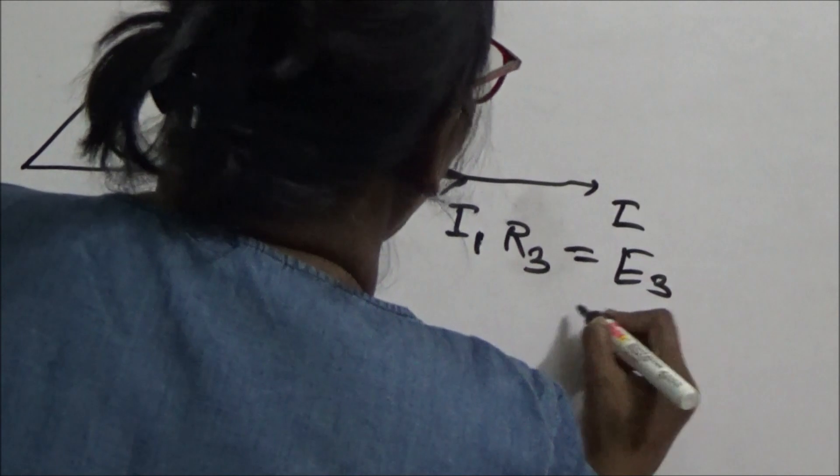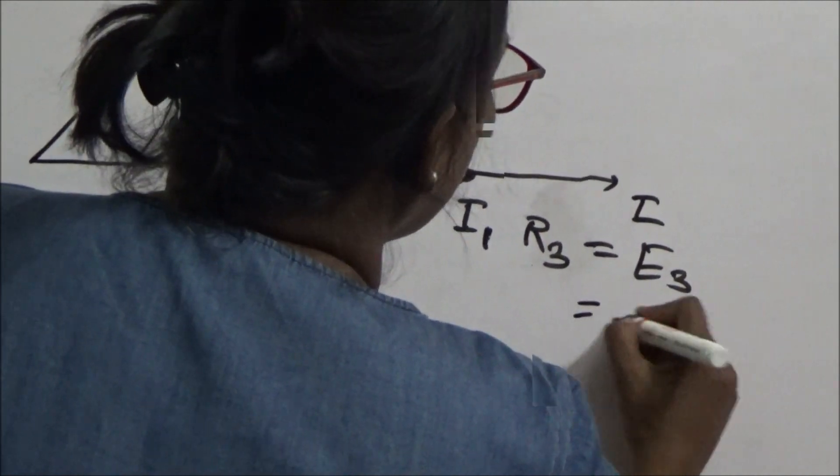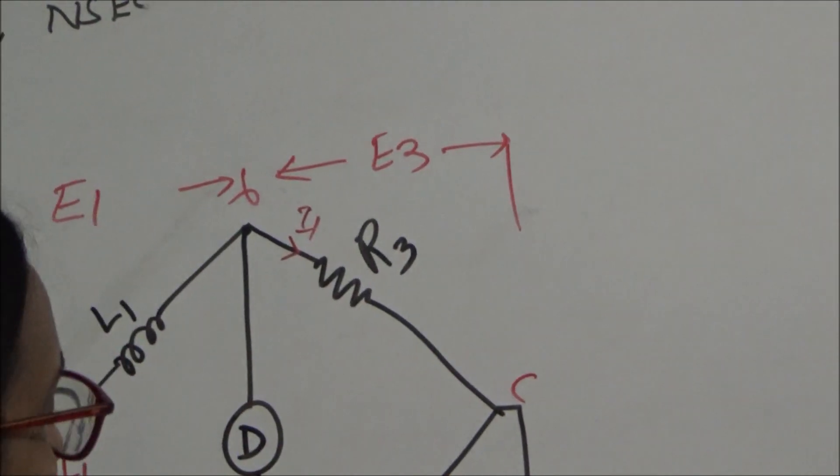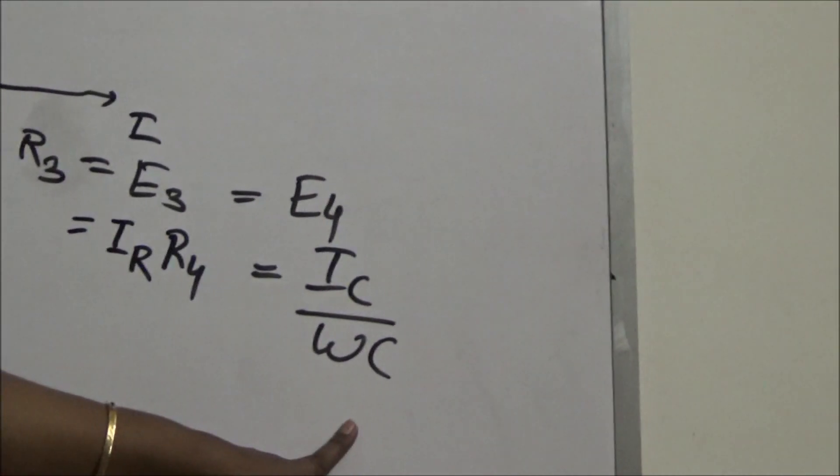Now E3 is equal to E4. So E3 is equal to E4. That is I1 R3 into R4 is equal to E4. E4 means IC divided by omega C4.